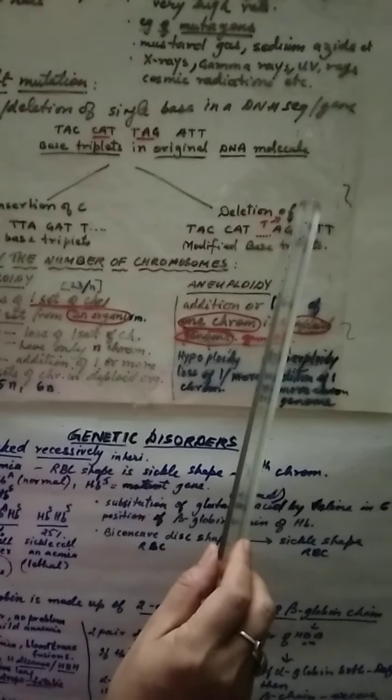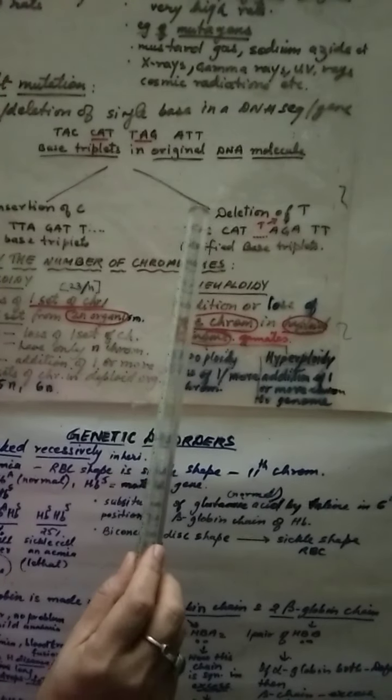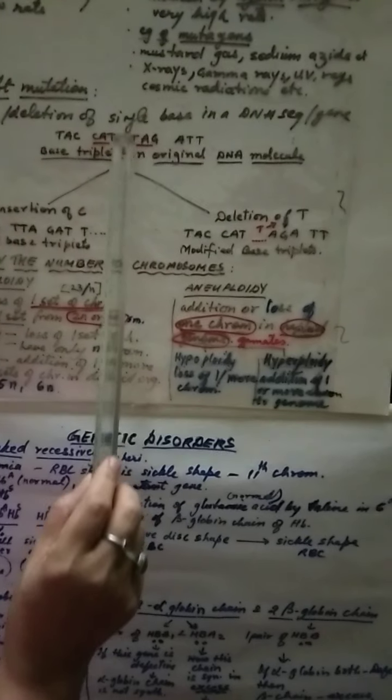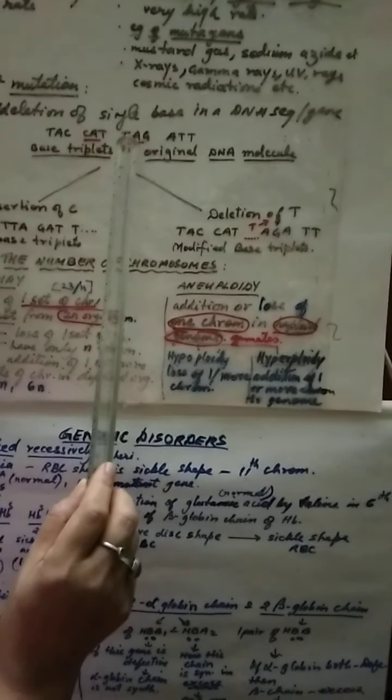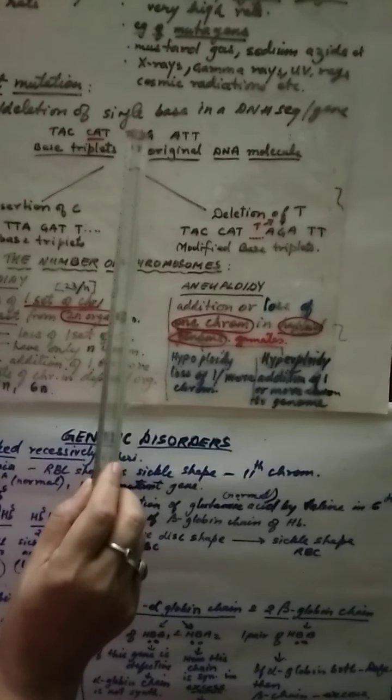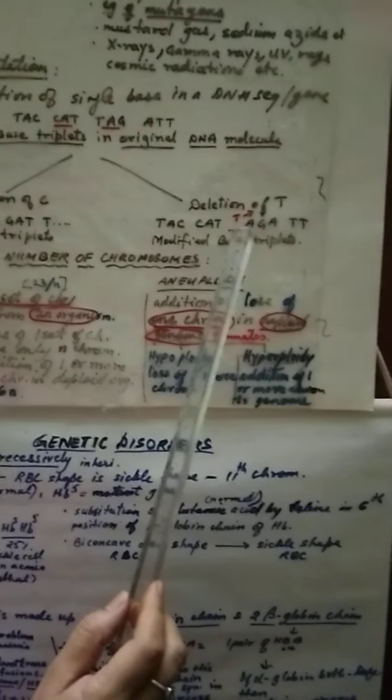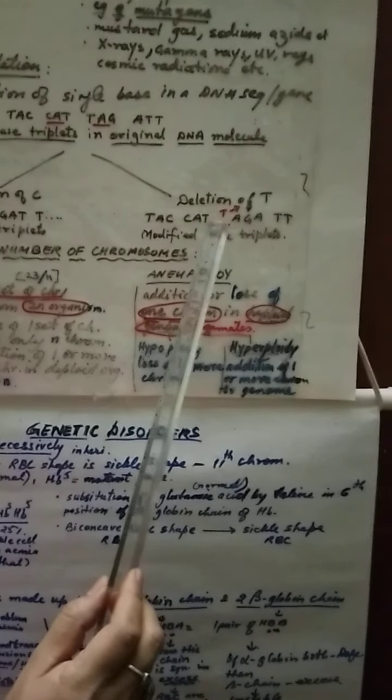Same way the second case of frame shift is deletion, that is removing of the thymine nitrogen base T. So this T has been removed, you can see it is out. When this is out, then A, G will take the A over here. So A, G, A. And this is how whole DNA sequence will change. So this brings the change in the character of organism.